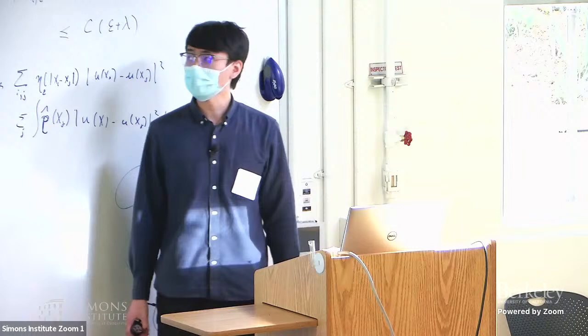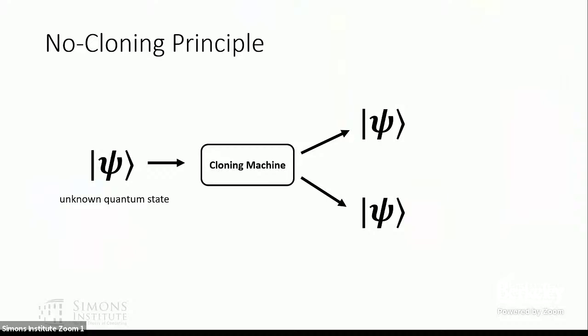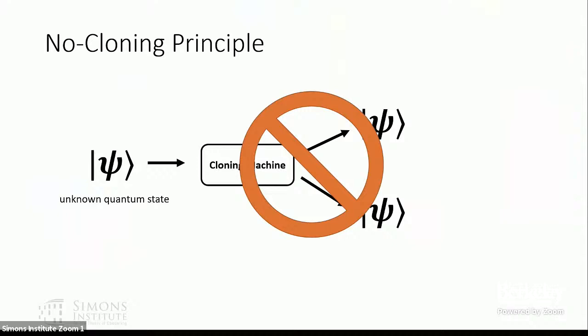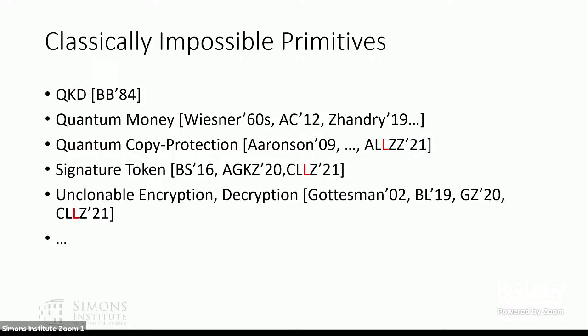The no-cloning principle says there's no way for a quantum algorithm to copy an unknown quantum state. Classically, it is simple because you know every single bit and can simply write a bit twice. But you cannot copy a quantum state — this is not doable in a quantum setting. So the no-cloning principle opens the door to many classically impossible cryptography primitives.